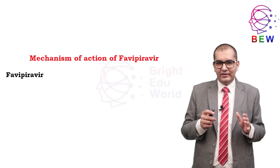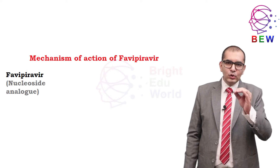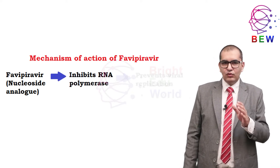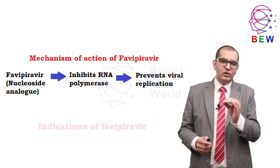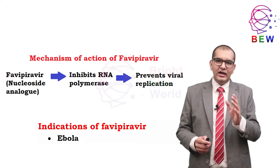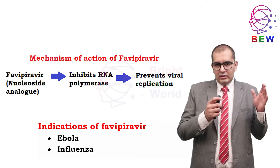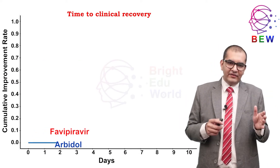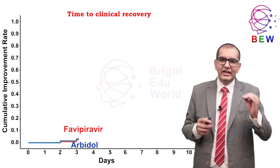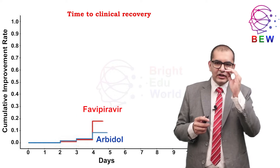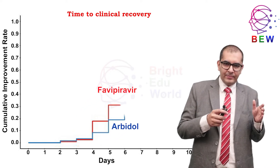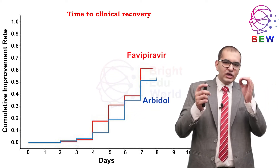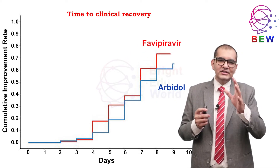The next drug is favipiravir, a nucleoside analog that inhibits viral RNA polymerase, initially intended for the treatment of RNA viruses such as Ebola and influenza. In one randomized controlled trial, favipiravir showed a higher clinical recovery rate and a statistically significant reduction in the duration of fever compared with other antiviral drugs used for influenza.